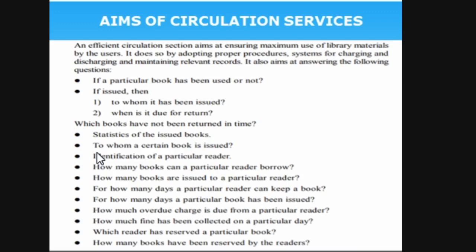Based on the circulation section data, you can answer research questions through in-depth analysis — how much fine has been collected from a particular reader, which reader has reserved a particular book, how many books have been reserved by readers. Based on simple statistics maintained by the circulation section, you can answer any number of questions. Hence, the circulation section is the data hub of the library. If you want any data about the library — list of books available, number of users, who comes most, who takes books most — you can get it from the circulation section.